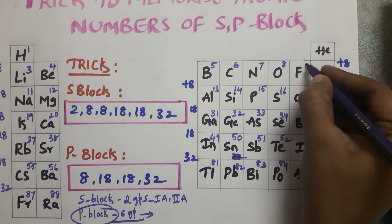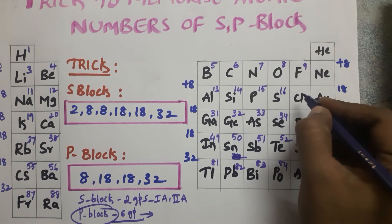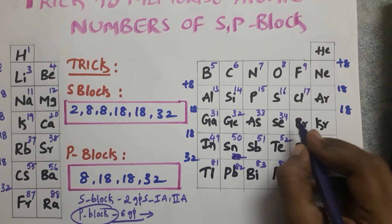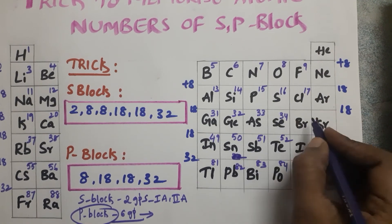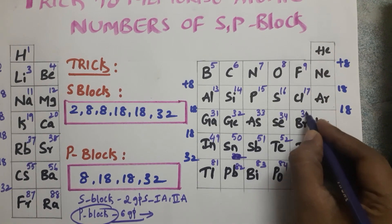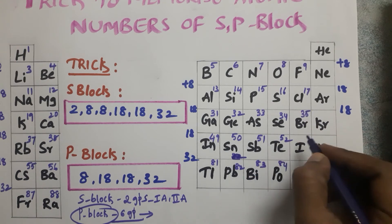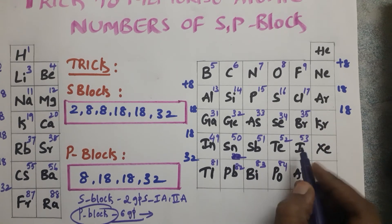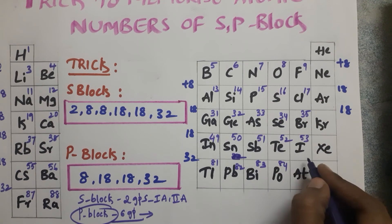Fluorine has atomic number 9. Then 9 plus 8 equals 17 (chlorine), 17 plus 18 equals 35 (bromine), 35 plus 18 equals 53 (iodine), and 53 plus 32 equals 85 (astatine).